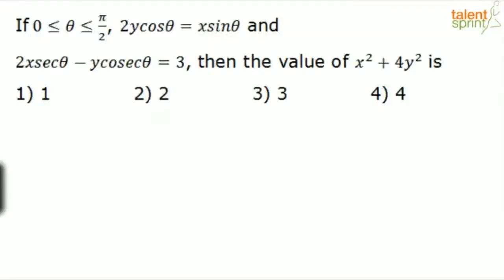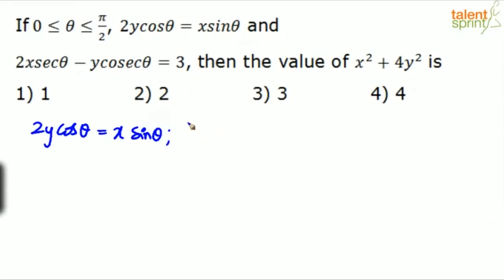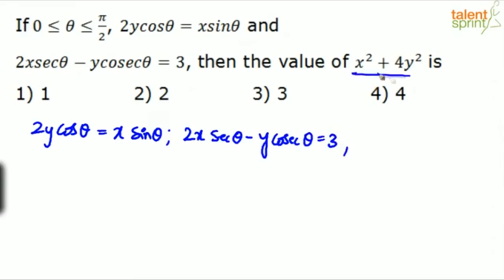Look at this question. If 0 ≤ θ ≤ π/2, we have been given two equations: the first is 2y cosθ = x sinθ, and the second is 2x secθ − y cosecθ = 3. Then what will be the value of x² + 4y²?